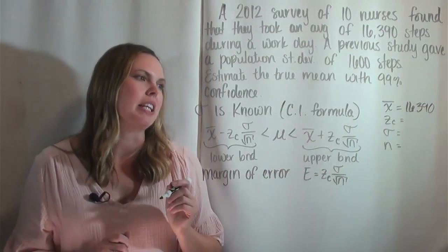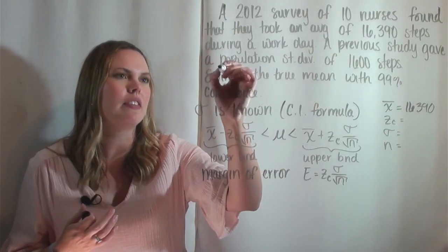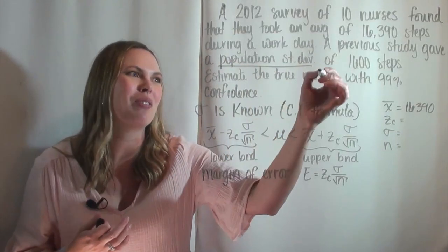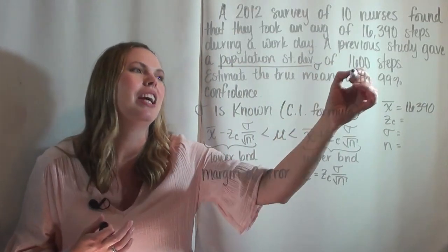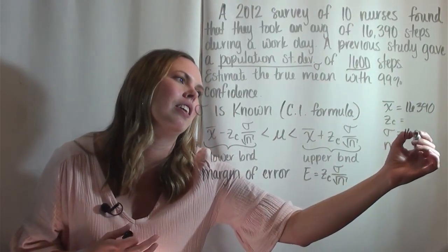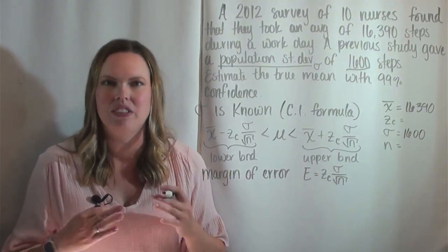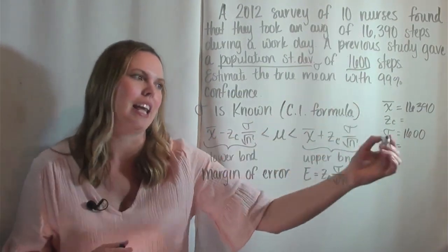Let me come back to z_c. Sigma is given pretty clearly. It's the population standard deviation, and it's given as 1600. And then n is the sample size. And so that's how many people we surveyed to form our sample. And that's the 10 here.